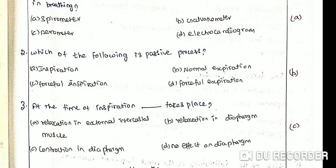During normal expiration, contraction in any muscles does not take place. Thus, there is no expenditure of energy. Relaxation in diaphragm and external intercostal muscles is found.